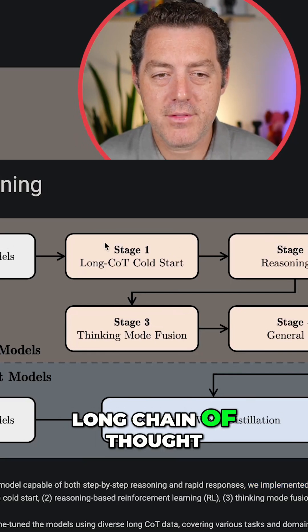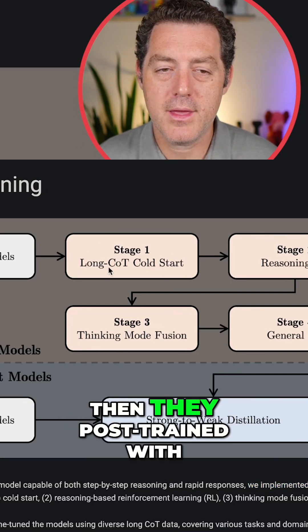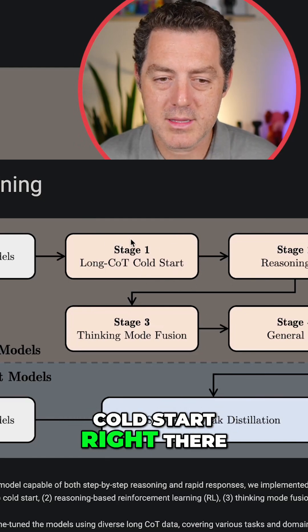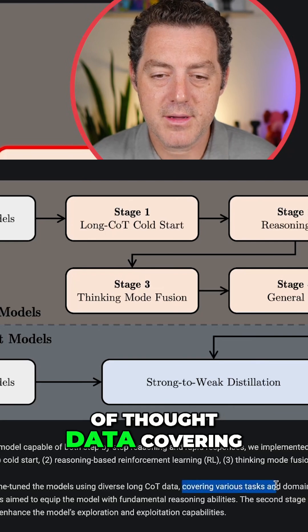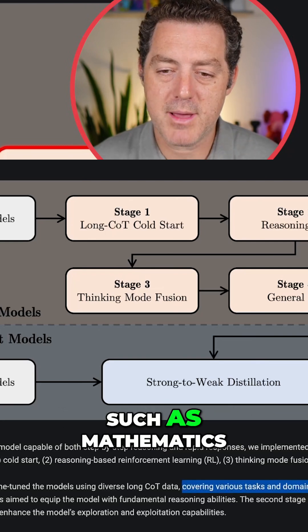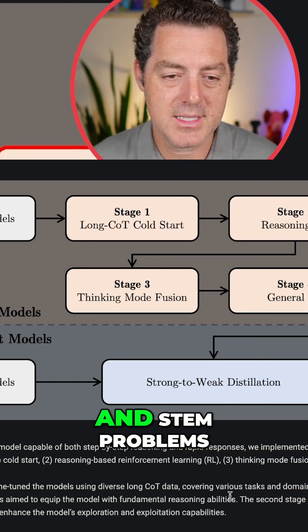First, long chain of thought. So here's the base model. Then they post-trained with long chain of thought cold start right there. So in this first stage, they use long chain of thought data covering various tasks and domains such as mathematics, coding, logical reasoning, and STEM problems.